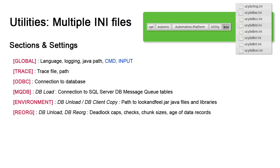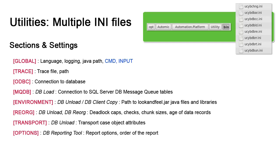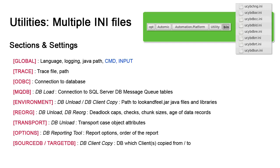dbunload and reorg have a reorg section to set the scope of records impacted by the utility, allowing us to set how far back we go in reorganizing records. Exporting objects with a transport case requires dbunload, so the utility has a transport section to set its behavior. In the reporting tool, we find an options section to set options on the report itself, like the order of reported records. dbclient copy copies clients across databases, so it has a source and target db set. Finally, dbarchive requires settings for the age table.